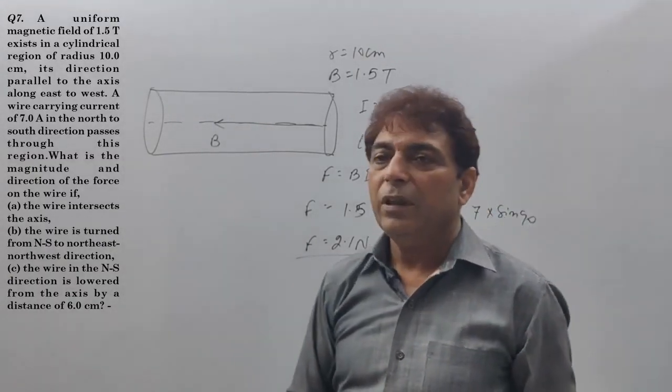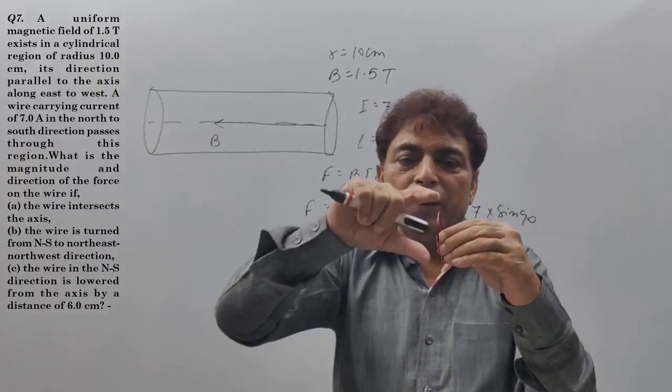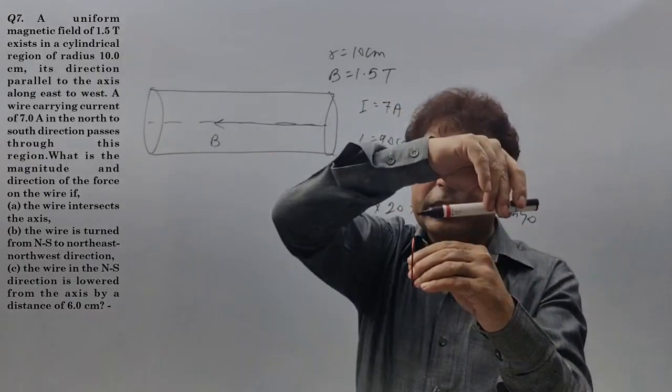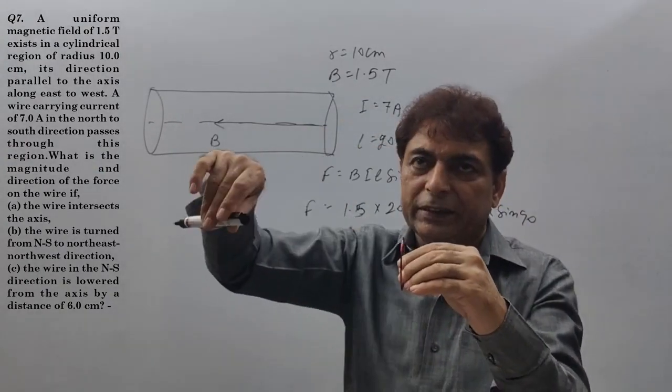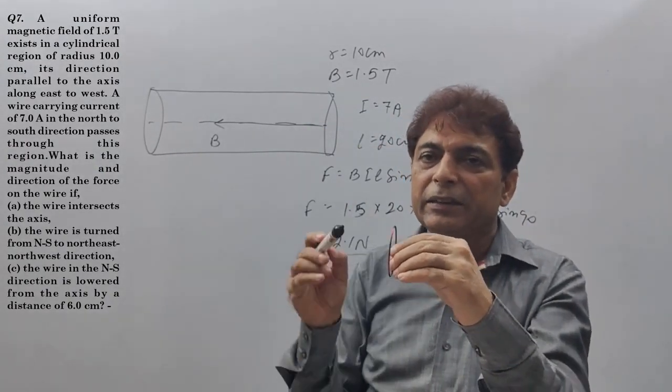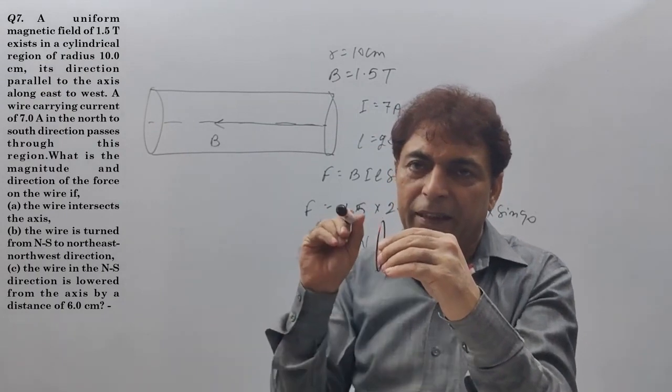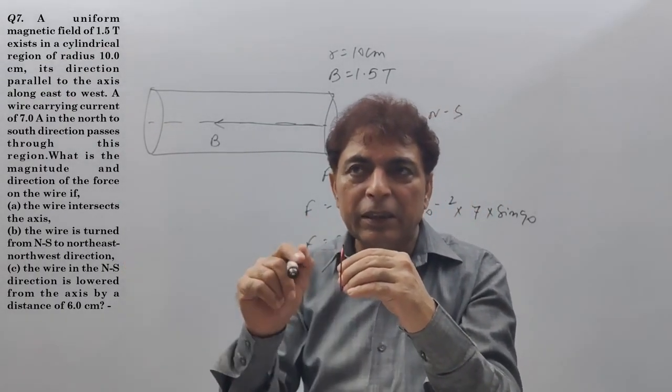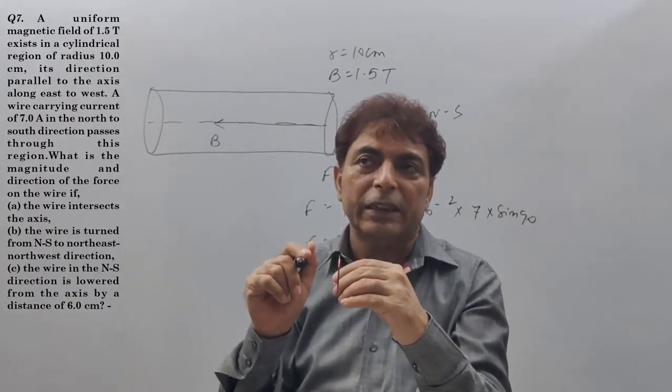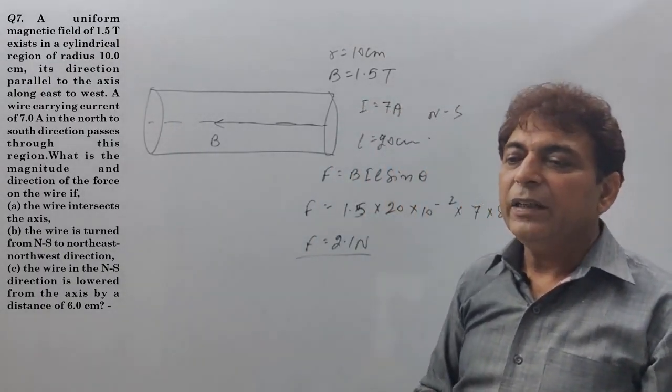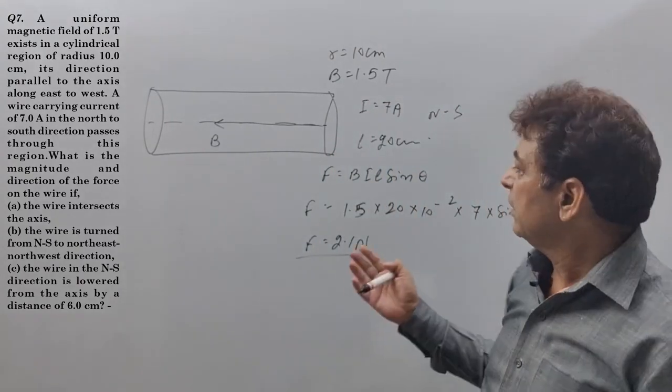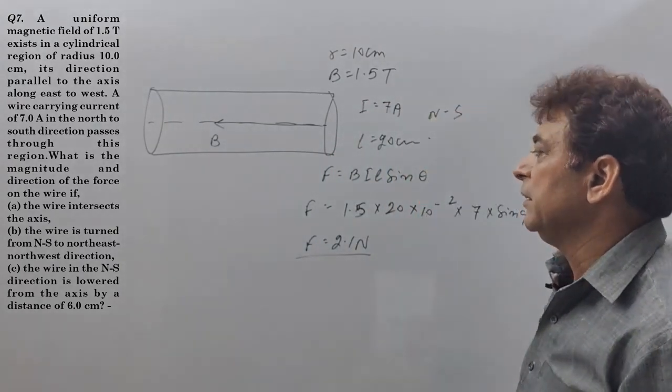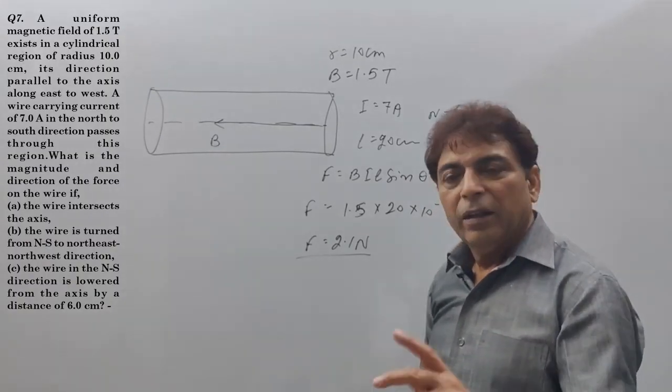Direction is important. We've got a cylindrical region. Field is in this direction, east to west. Now from this cylindrical region, if a wire passes north to south, then from this region, how much length of wire will cross? The cylinder's diameter. The cylinder's diameter is 20 cm, as its radius is 10 cm. Now the direction.